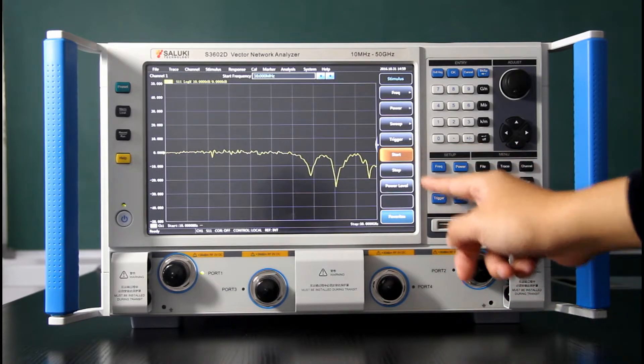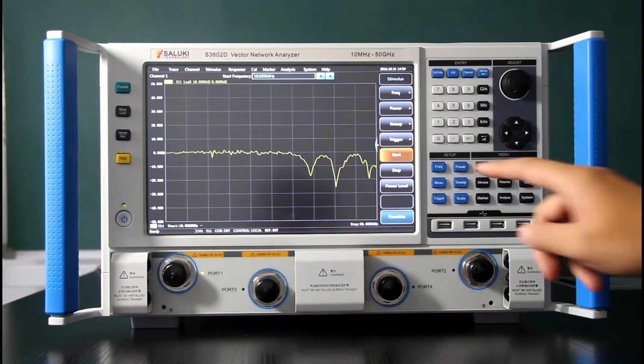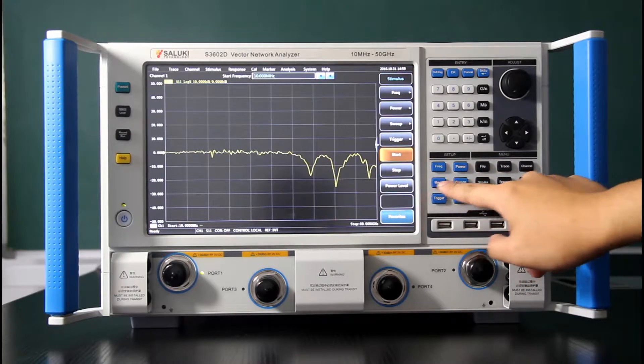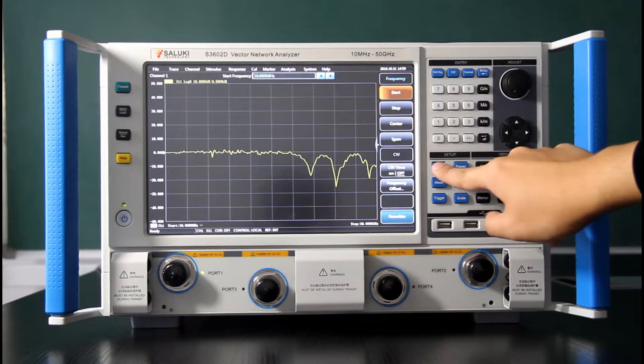So the setup zone, we use blue keys. It means you will often use these keys to do the measurement. They are frequency, power, measure, sweep, trigger and scale.